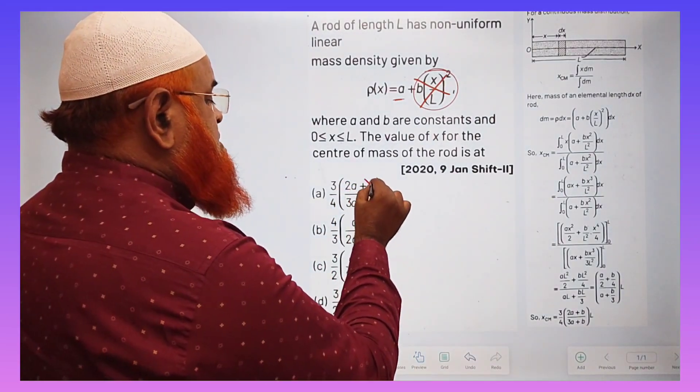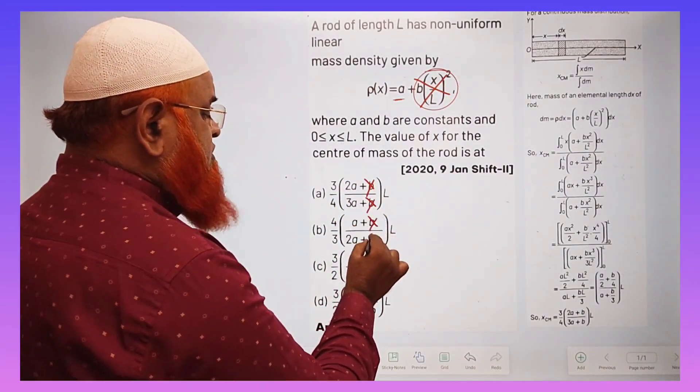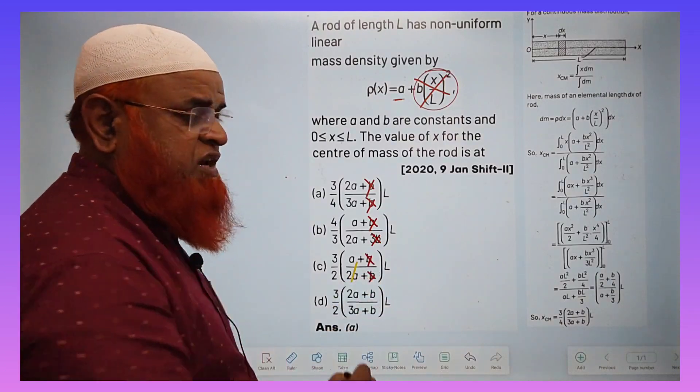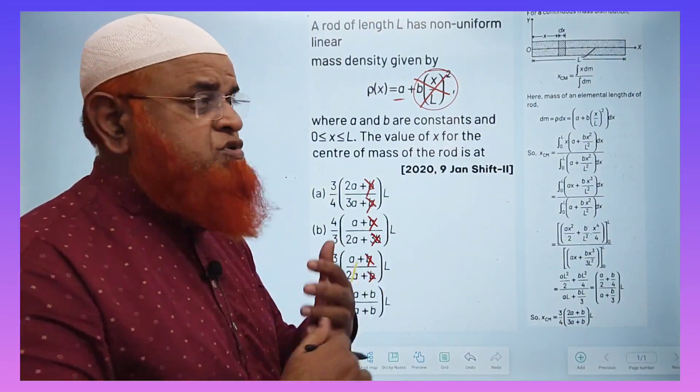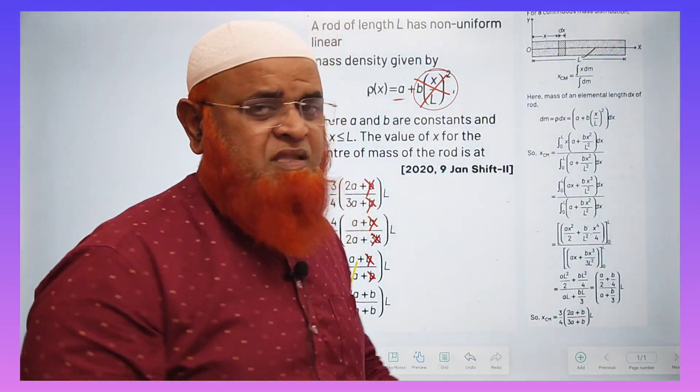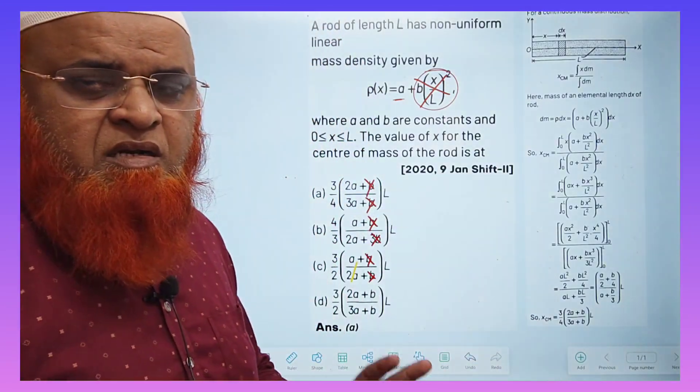You have to remove the B part in all cases. After removing the B part, if the remaining part gives you L by 2, then that is the correct answer. This is a shortcut.